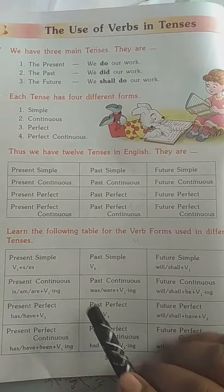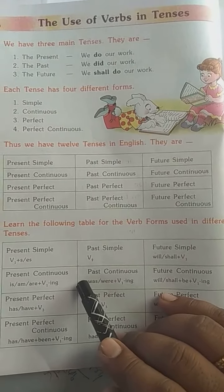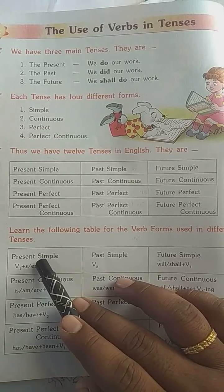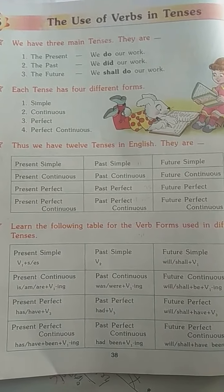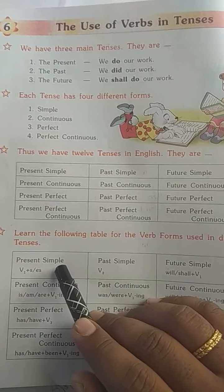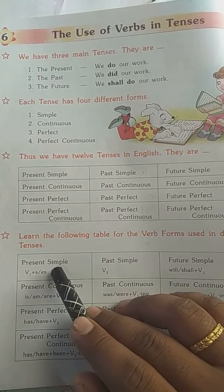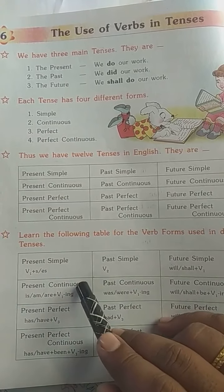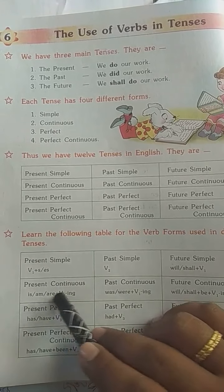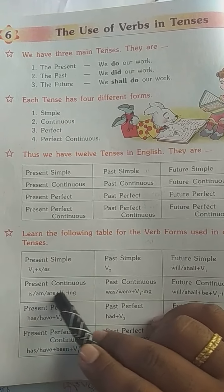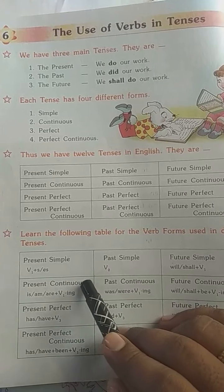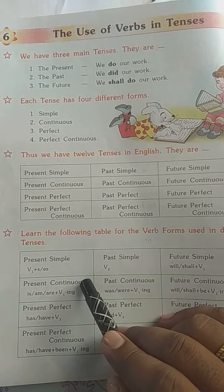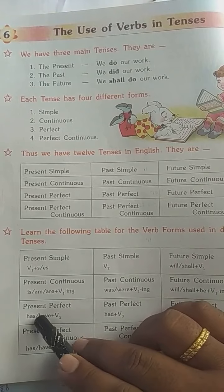Now learn the following table for the verbs from the different tenses — dekho is ka structure kya hai, kaunsa formula hai, kaise sentence pehchana. First, in simple present tense, V1 (verb ka pehla roop) aayega, plus 's' or 'es'. Second, present continuous mein am/is/are in teeno mein se ek aayega, phir V1 plus 'ing' — kyunki continuous hai, matlab action chalu hai.